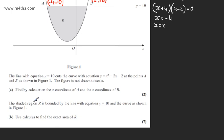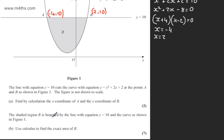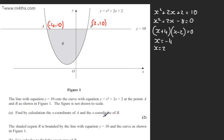We're now told the shaded region R is bounded by the line with equation y equals 10 and the curve as shown in Figure 1. In part (b) we're asked to use calculus to find the exact value of R. The question carries 7 marks.